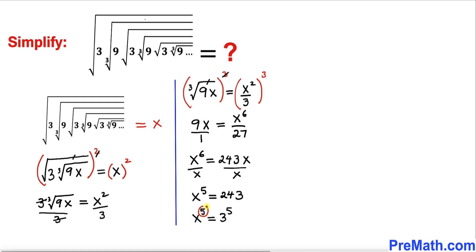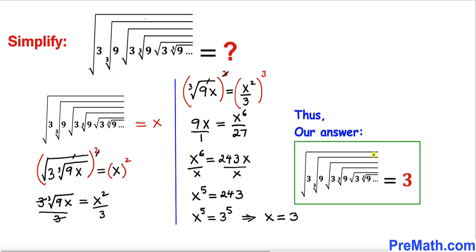Now since the exponents are the same, therefore we conclude that x turns out to be equal to 3. We know that our x is this whole radical expression. Therefore this whole radical expression has been simplified to 3.